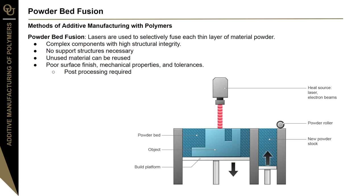Powder bed fusion utilizes lasers to selectively fuse a thin layer of material powder. Powder is then re-dispersed evenly and another layer is fused, continuing until a complete 3D model is formed. Powder bed fusion can create complex components with high structural integrity; no support structures are necessary and any unused material can be reused. However, this process yields poor surface finish and tolerances, which means post-processing is almost always required.